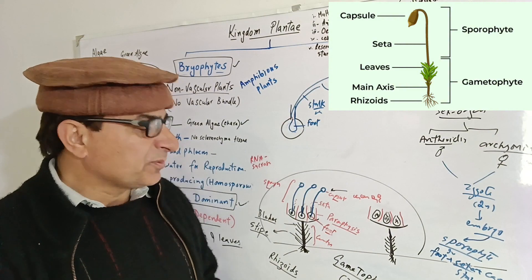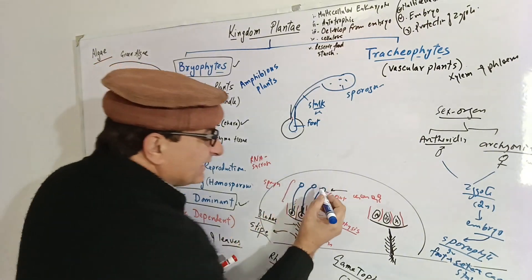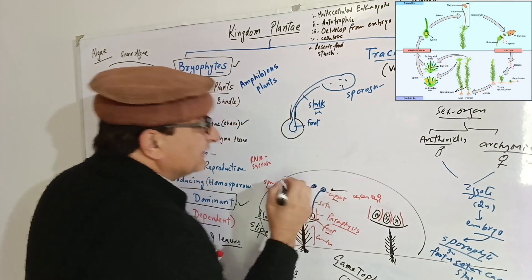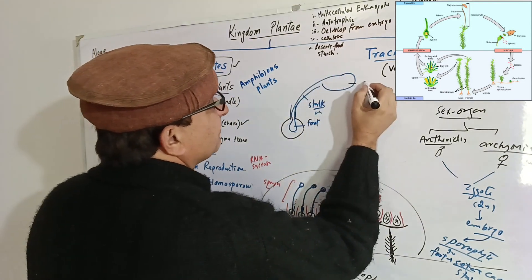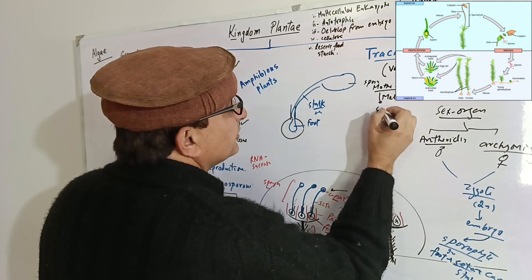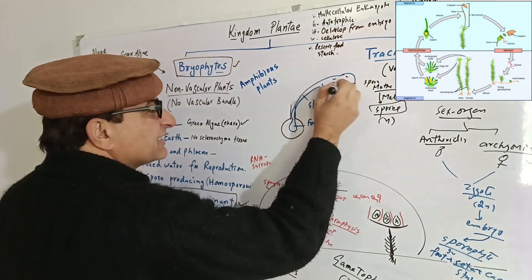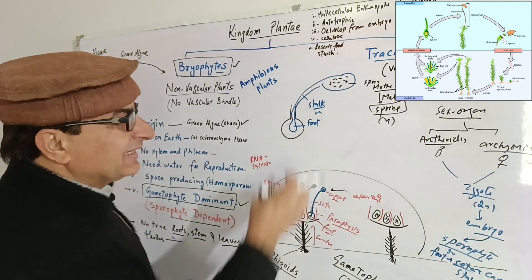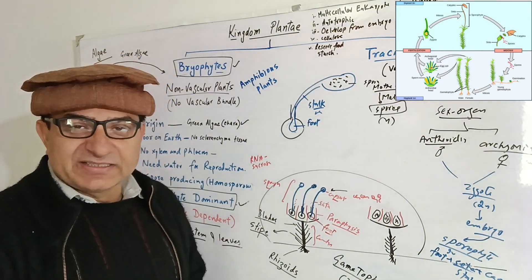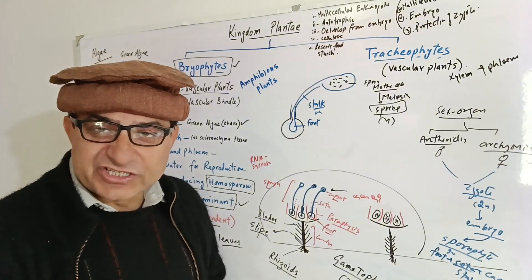Inside the sporogonium, there is a spore mother cell. This spore mother cell undergoes meiosis and produces spores. When meiosis occurs, the spores produced are haploid. The spores produced inside this sporogonium are haploid and morphologically identical in size — that is why these spores are called homospores, the plants are called homosporous plants, and the condition is said to be homospory.